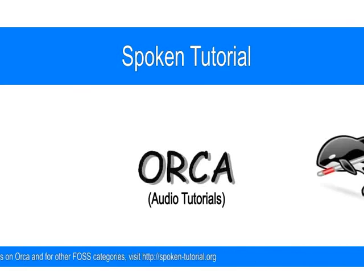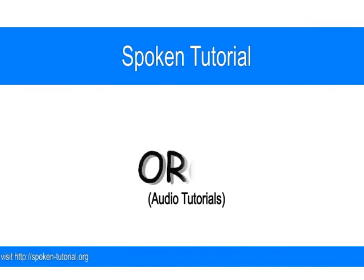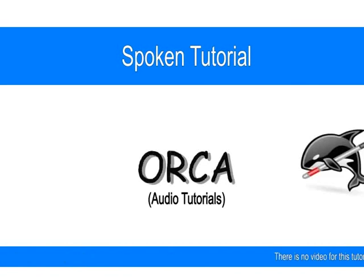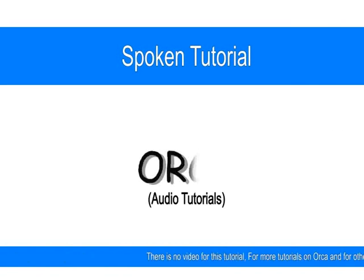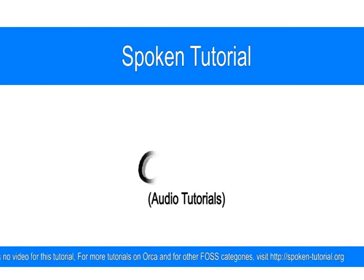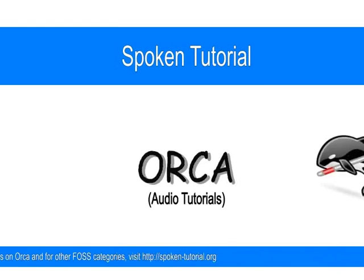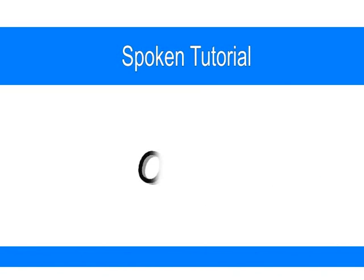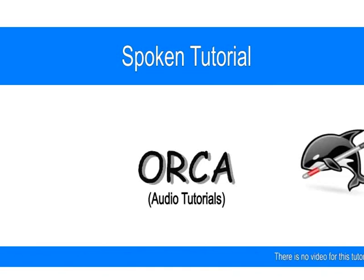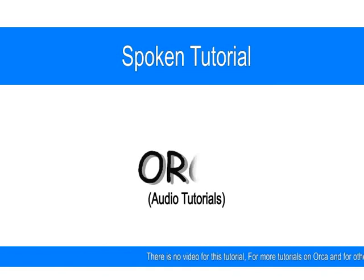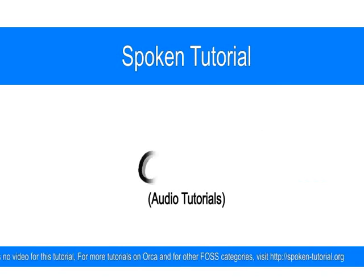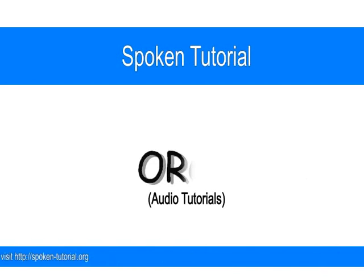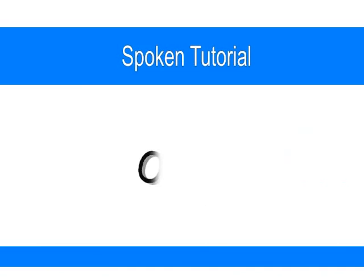Enable modifier keys — enter Y or N. Orca now asks us if we also want to hear the keys including Shift, Alt and Control keys to be echoed back. Let's enter Y as in yes. Enable locking keys — enter Y or N. Orca is asking us if we want to hear the Caps Lock, Num Lock and the Scroll Lock keys be echoed. Let's enter yes for this as well. Enable function keys — enter Y or N. Orca asks us a similar question about echoing the function keys. Let's press Y as in yes.